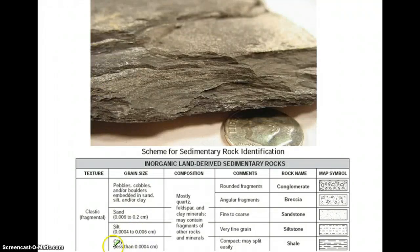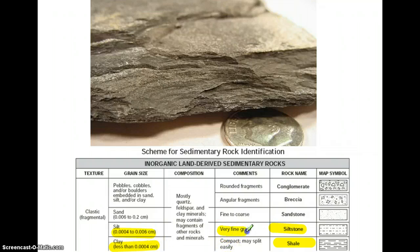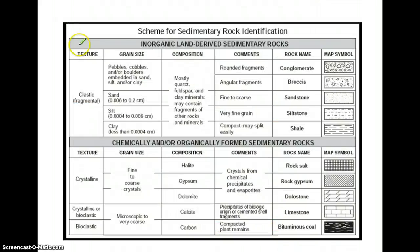If the grains are smaller than sand, they would be called silt or clay. Depending on the size of the particles, you're not going to see the actual grains because they are microscopic. What we'll find is that they are very fine-grained, very smooth, and very compact — and shale can split easily. So those are our clastic rocks: inorganic, not living, coming from things on the land, and classified based on their grain size.